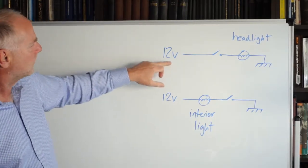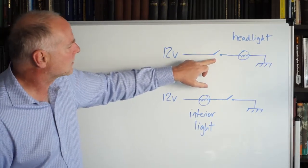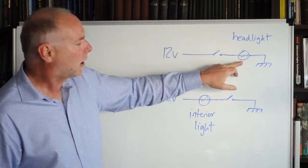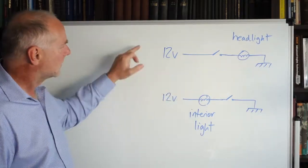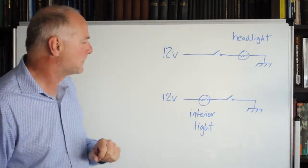So the top one, we've got the headlights, we've got 12 volts being fed to the headlight switch, when that switch is closed, power passes through it, turns on the headlight and of course the electrical circuit is complete because that's connected to the negative side of the battery. Easy.